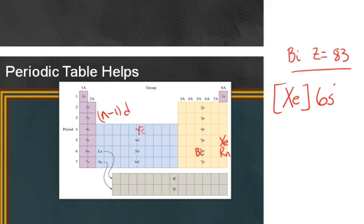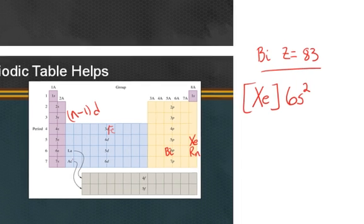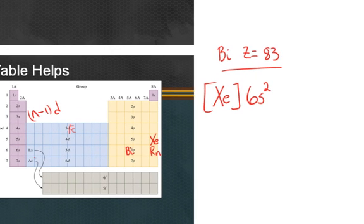So you're going to fill up the 6s with two electrons, and then you move to the f block. And the f block, when you fill, is n minus 2f. So the n that we're in is 6, so 6 minus 2 is 4. So it's going to be 4f. Go all the way across, and that's 14.